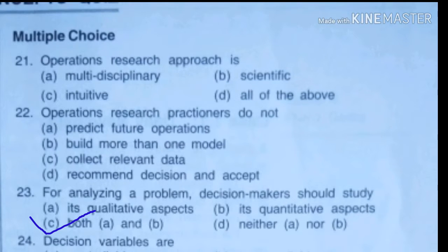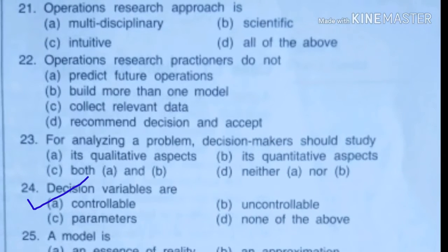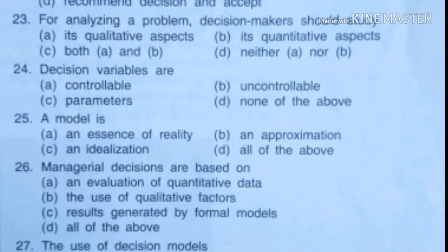Decision variables are - option A, it's controllable. We make a decision, so we also can change in any procedure, we can do it.